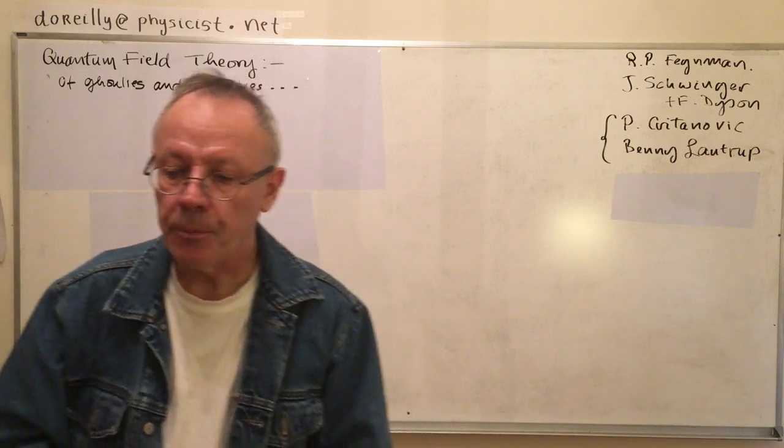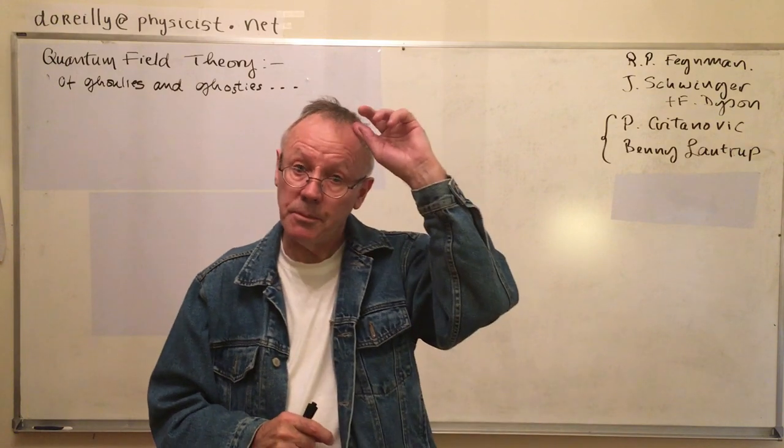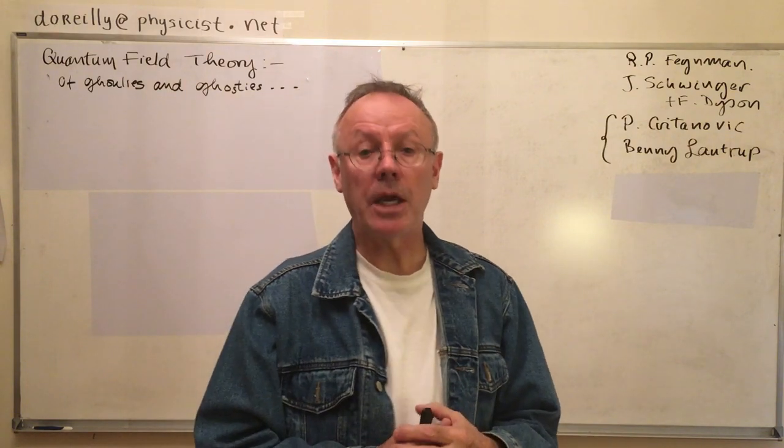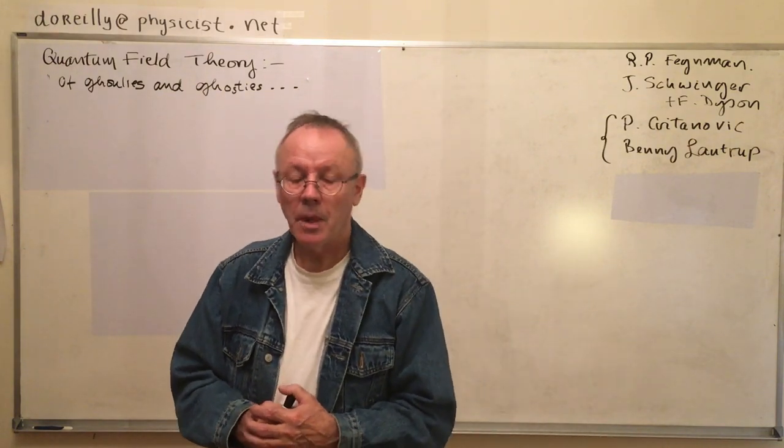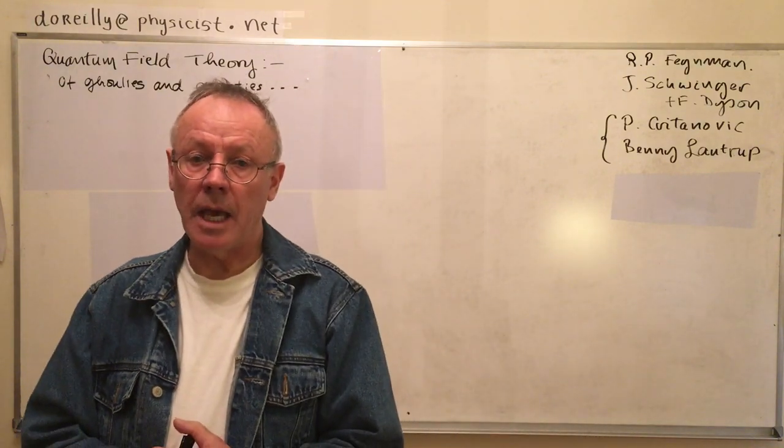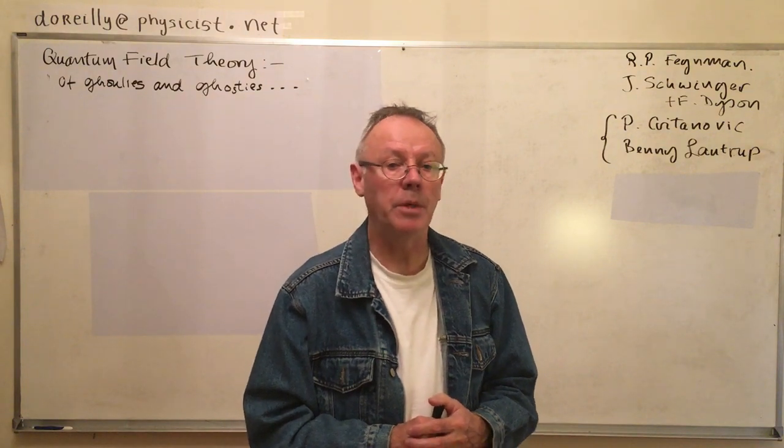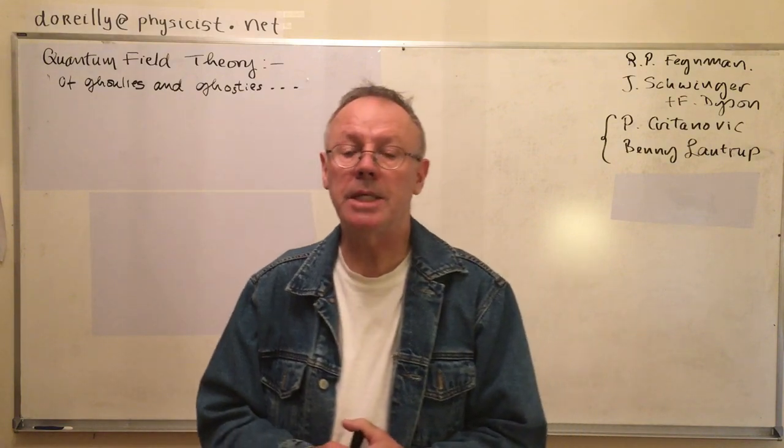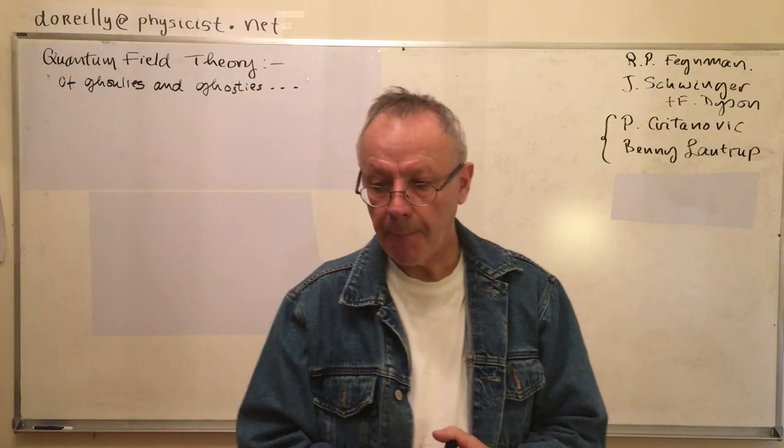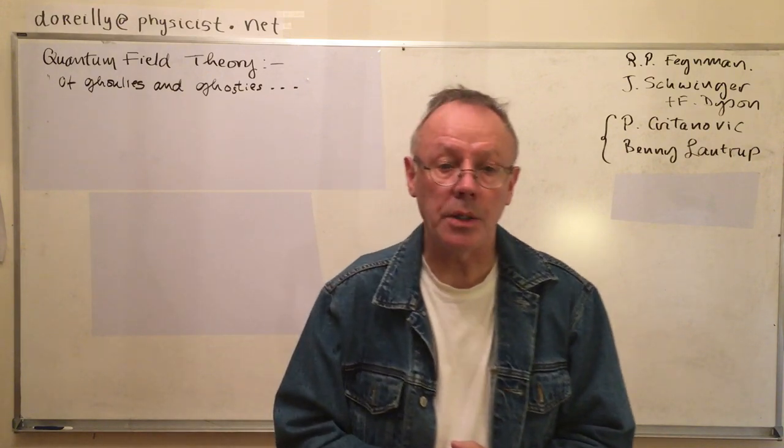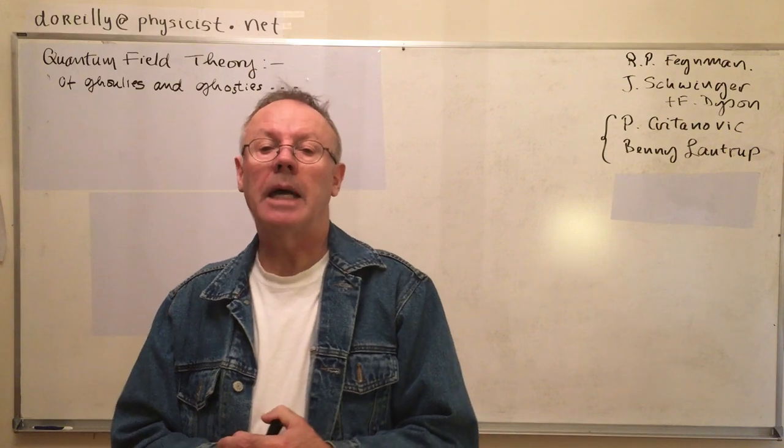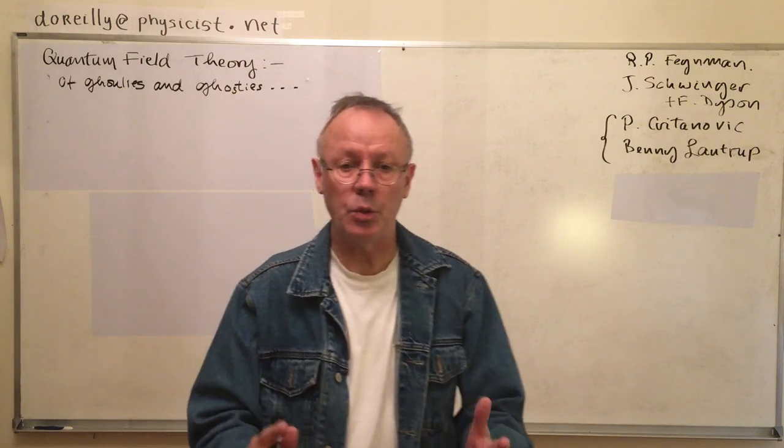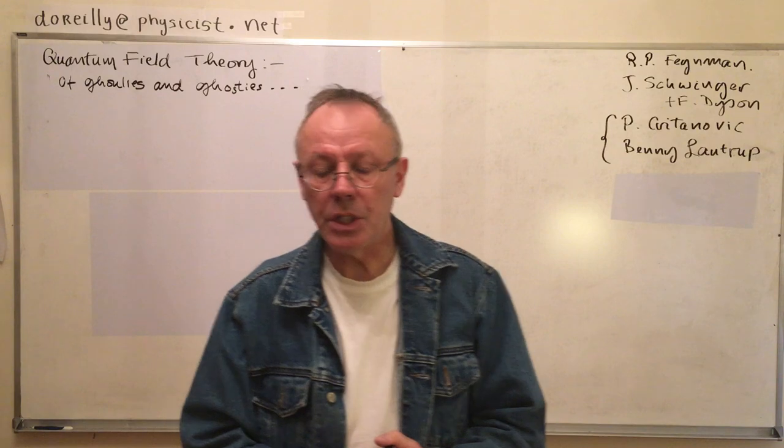In quantum field theory, what is a particle? It's not fully understood. For us, a particle is going to be an excitation of the vacuum. Some particles would be electrons. Another particle would be a photon. The theory of electrons and photons is called quantum electrodynamics. Another particle could be a meson, represented by a scalar field. Another particle could be a quark. Quarks and gluons have their own theory called quantum chromodynamics. It's a non-abelian version of QED.